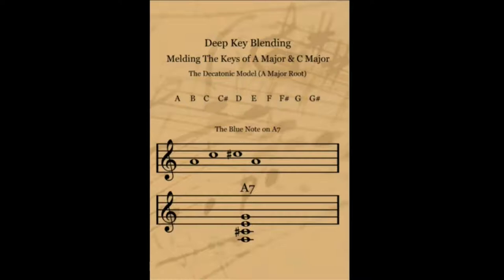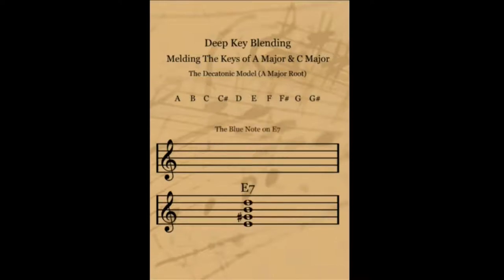Following the same type of phrasing, let's check to see if we can get a blue note on a D7 chord, which would be the F note. And there it is. Finally, we need to get a blue note G for the E7 chord. And yes, everything is in order — we're getting all three blue notes.